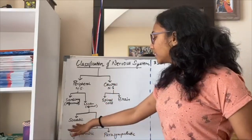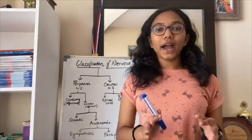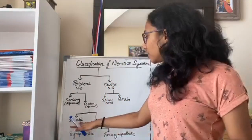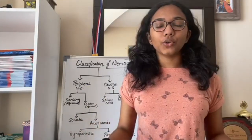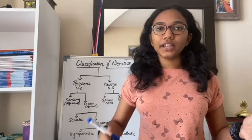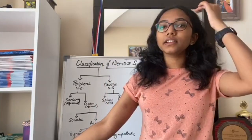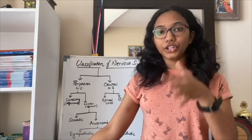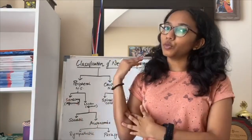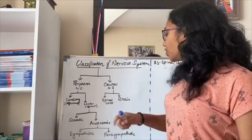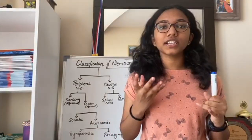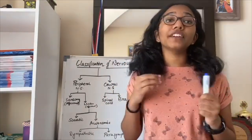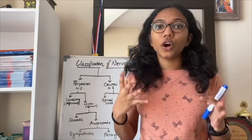Motor nerves are also divided into two parts: somatic and autonomic. Somatic nerves control voluntary movements of your body — for example, the somatic efferent nerves send a signal through the motor neuron to move your hand. Autonomic nerves are for the visceral organs, which are the organs deep inside the body, and they mostly involve involuntary movements that are not conscious.